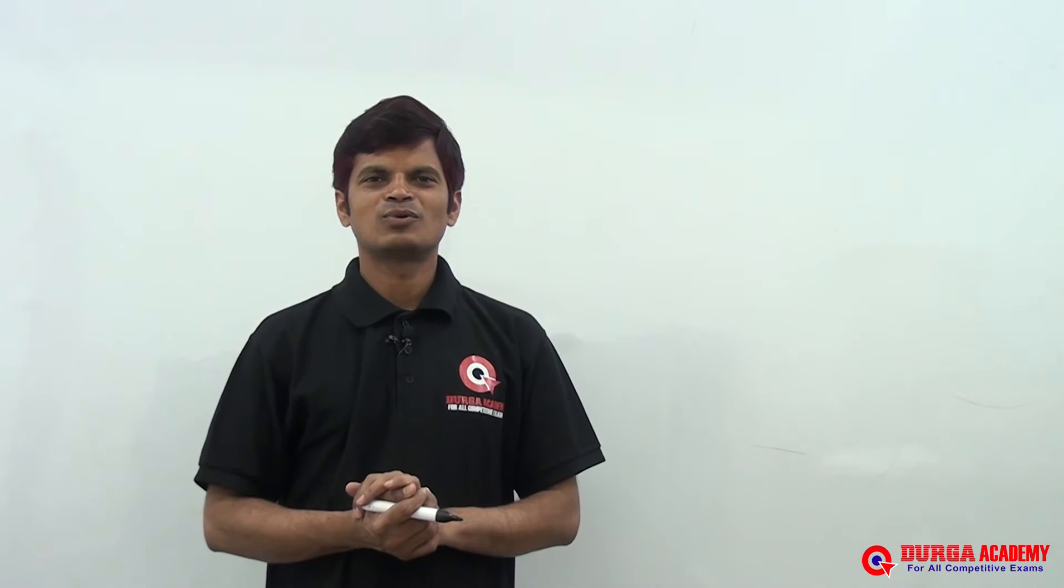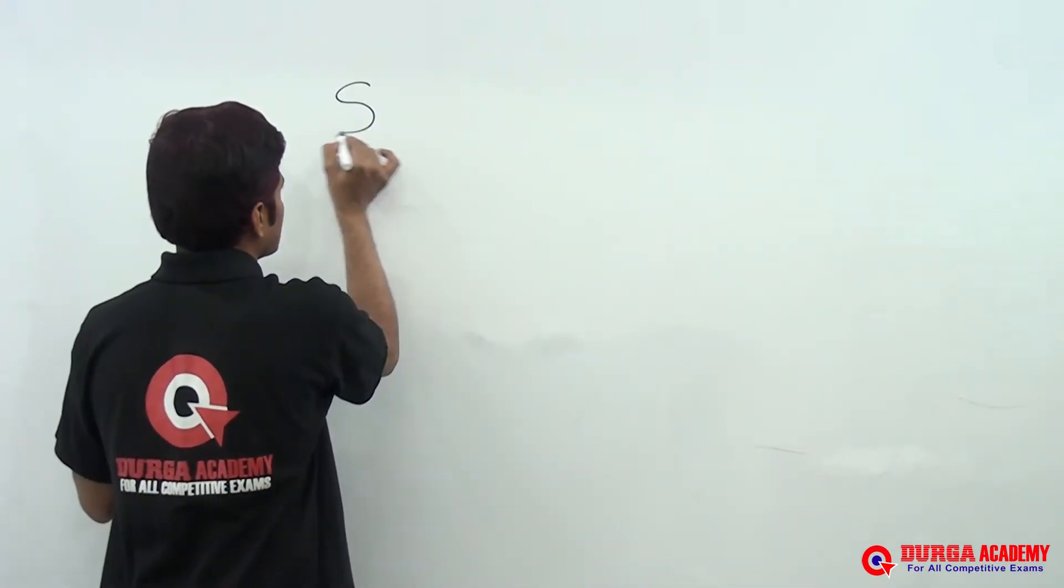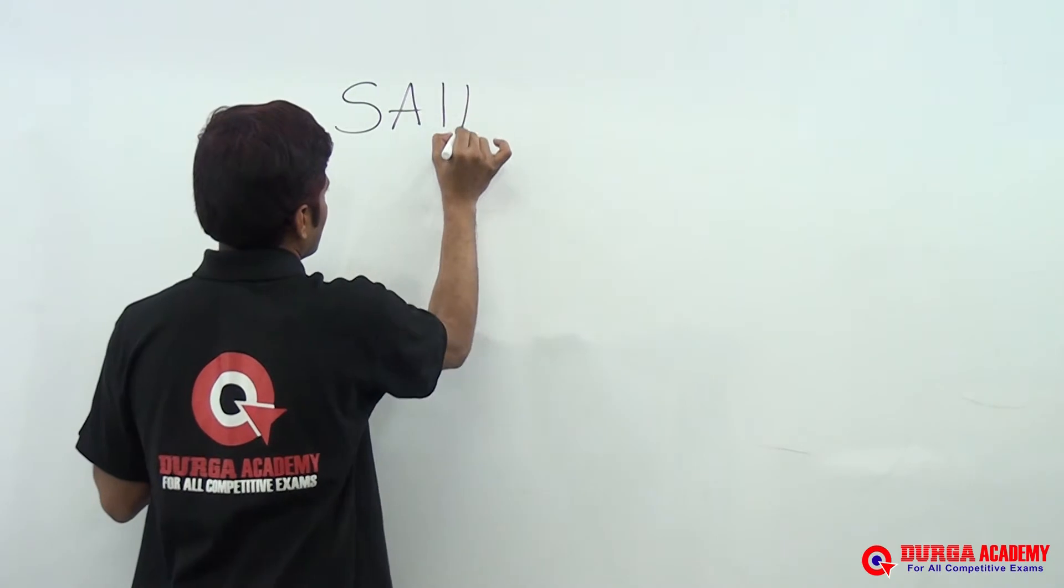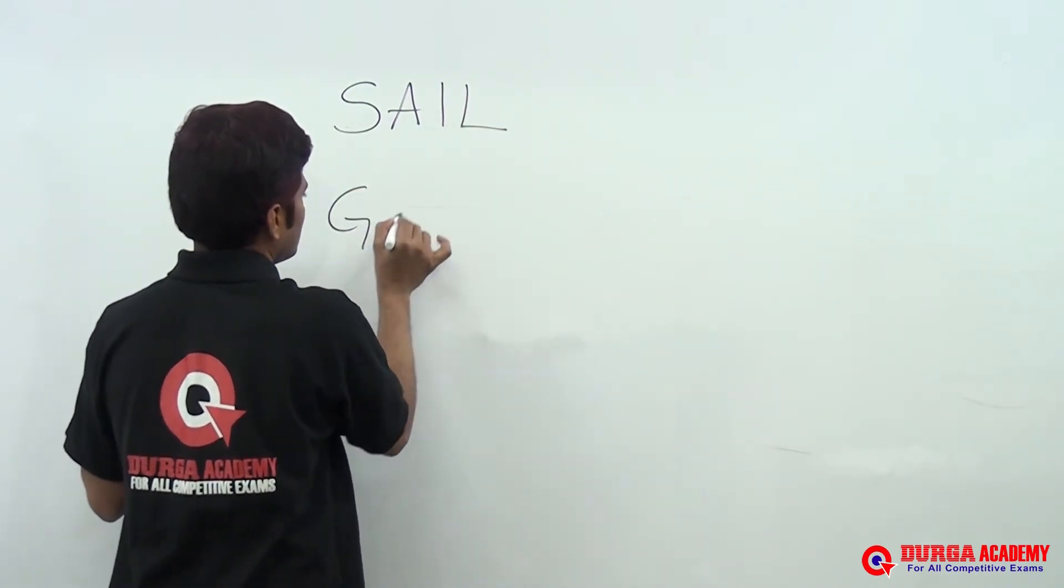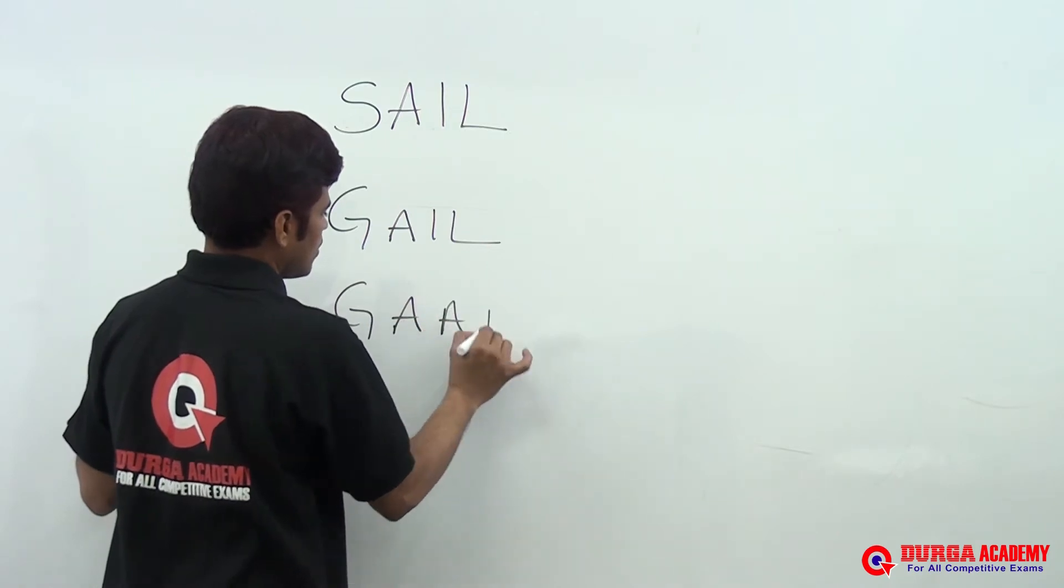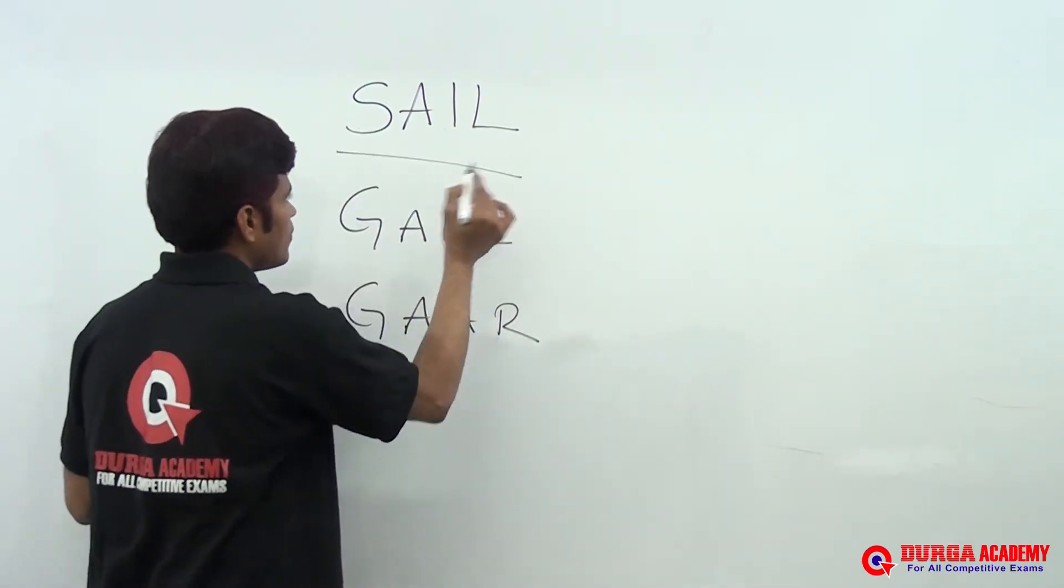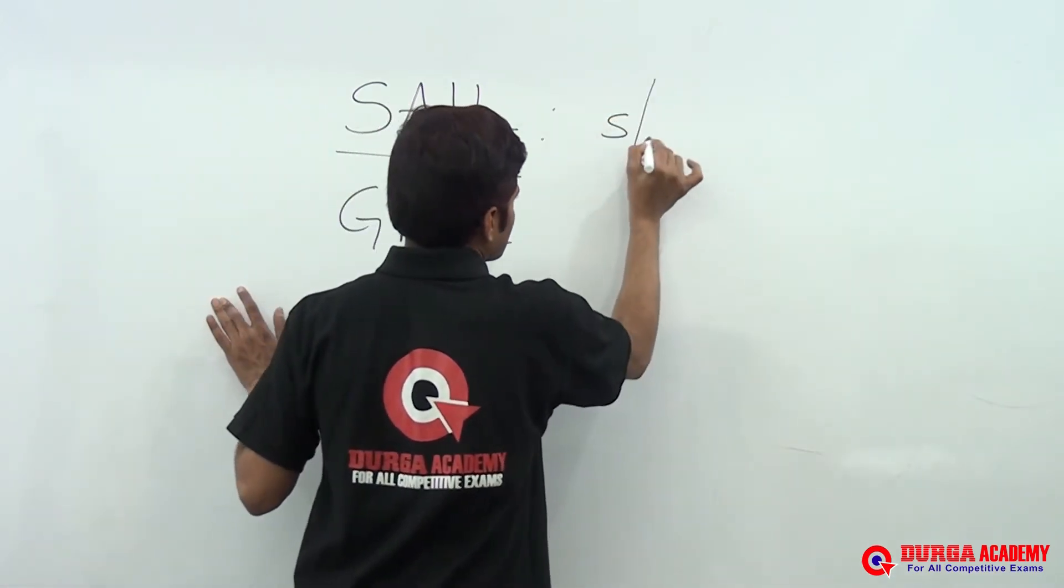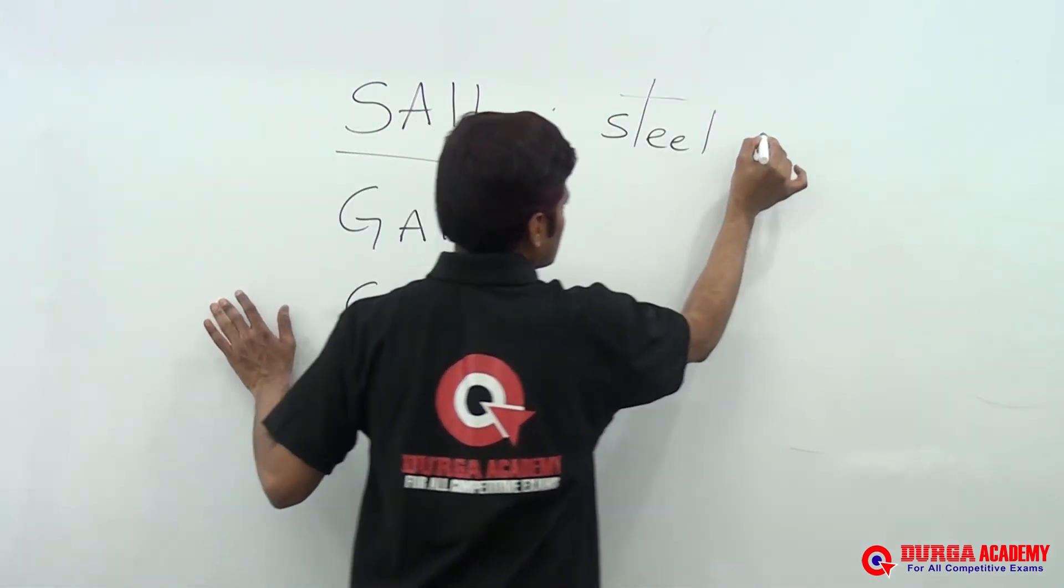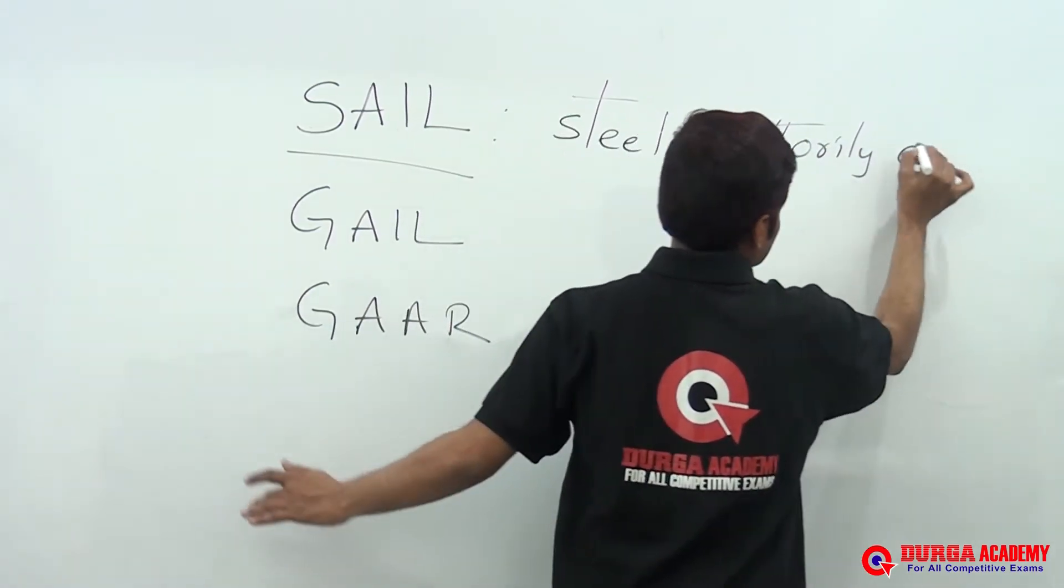Hi friends, welcome to Durga Academy YouTube channel. This is Amar. In today's GK session, we will discuss three important abbreviations. First, SAIL, GAIL, and GAAR. SAIL means Steel Authority of India Limited.